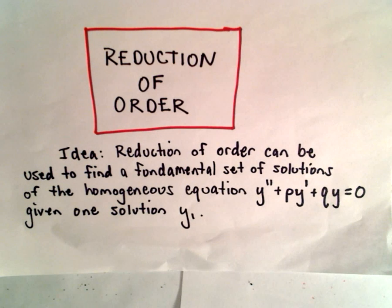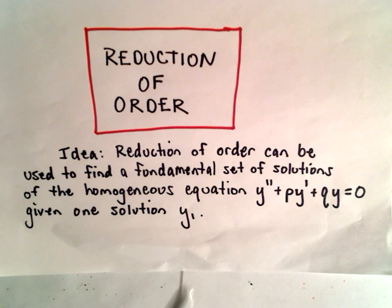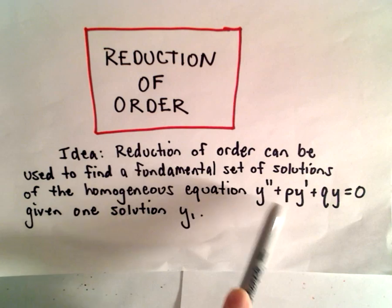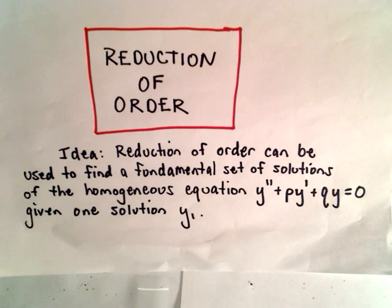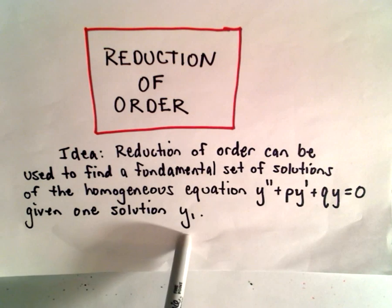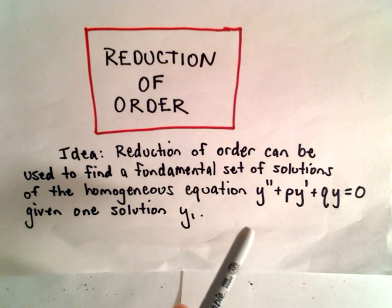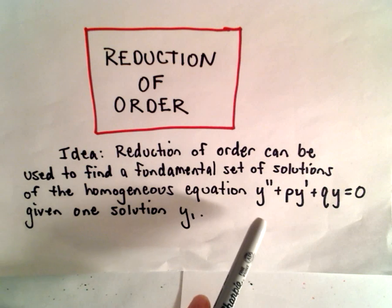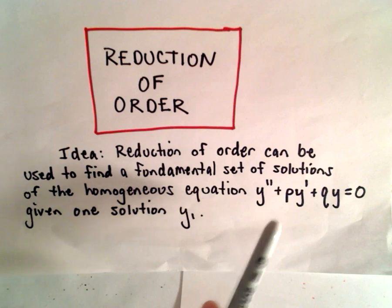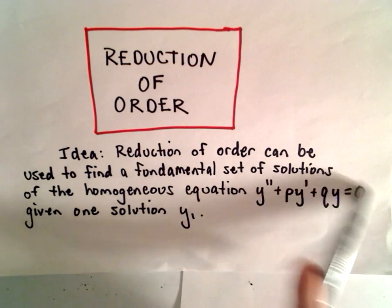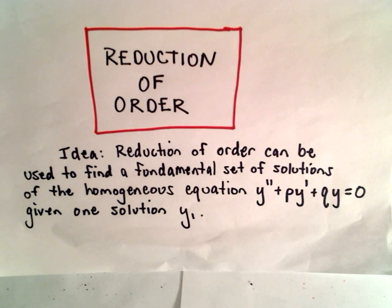In this video I want to talk about reduction of order. The idea is reduction of order can be used to find a fundamental set of solutions of the homogeneous equation y double prime plus p times y prime plus q times y equals zero, given one solution y sub one. The basic idea is, if we're given a solution, we can basically turn our differential equation into a first order homogeneous linear differential equation, and we have techniques to solve those — we can either use separation or integrating factors.